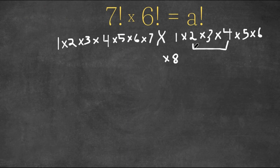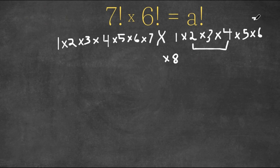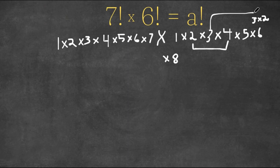Now, how would we get 9? Well, 9 is 3 times 3. As you can see, we already have one 3 over here, but we're missing another 3. We could actually rewrite 6 as 3 times 2. Now, we can get our 3 from here and multiply these two. 3 times 3 is 9, so we have 8 times 9.